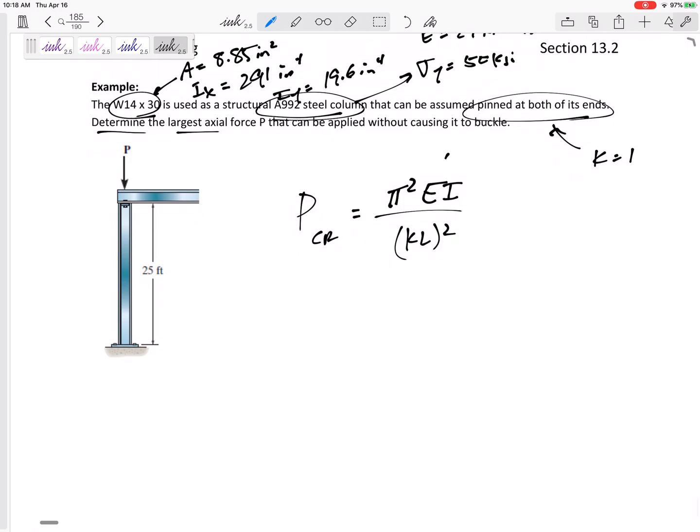All right, so if we know the material E, if we know the shape I, and we know this length right here, 25 feet, would be the L, the axial length. So the length is the long length in the axial direction. We can find the largest axial force that won't cause it to buckle. So it's not too bad, just plugging in to our equations.